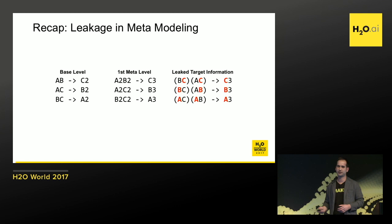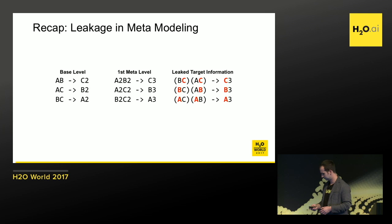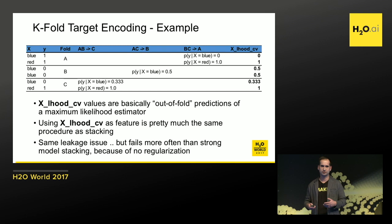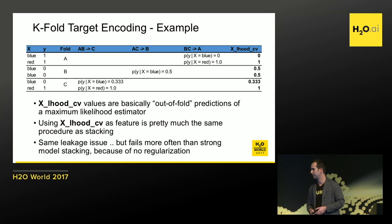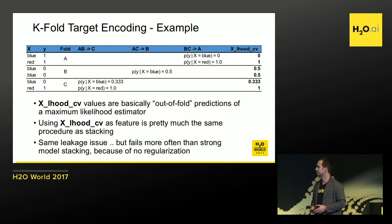But we're actually not fine. If you look again at the leakage in metamodeling: if we now use this feature to retrain a model — which is exactly what we want to do — we end up with the same problem we saw in stacking. The feature X_L_CV is nothing other than outer fold predictions from a maximum likelihood estimator. Using that feature is essentially the same as stacking. It's technically the same, and it also has the same leakage issue.